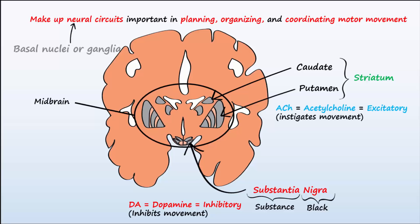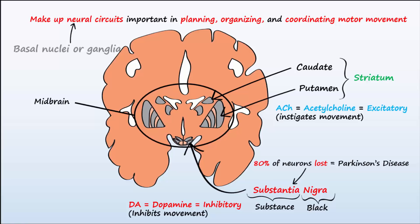The symptoms of Parkinson's disease begin to occur when approximately 80% of the dopaminergic neurons of the substantia nigra die, causing an imbalance between the excitatory acetylcholine and the inhibitory dopamine.